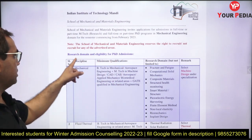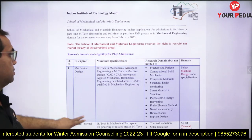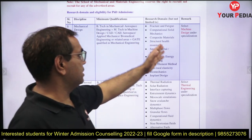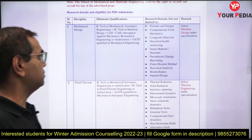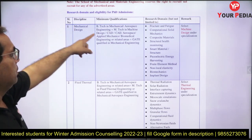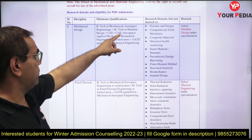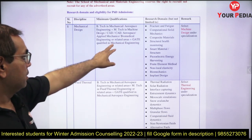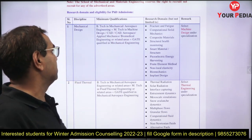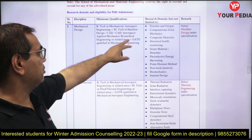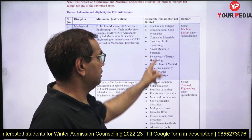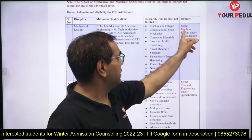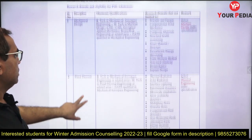Now let's look at the research domains and eligibility for PhD admissions — which domains are available and what the eligibility criteria are. For Mechanical Design, the minimum criteria is BTech in Mechanical or Aerospace Engineering, plus MTech in Machine Design, CAD, CAE, Aerospace, Applied Mechanics, Biomedical Engineering or related areas, plus a valid GATE score in Mechanical Engineering.